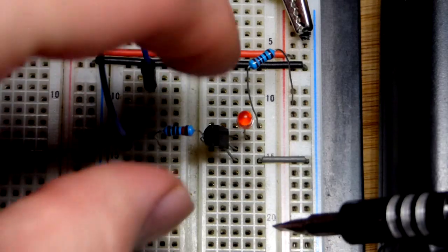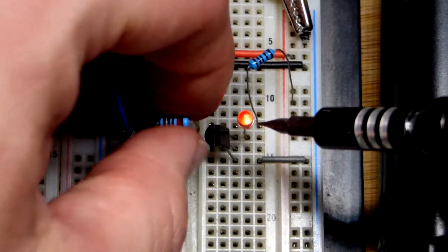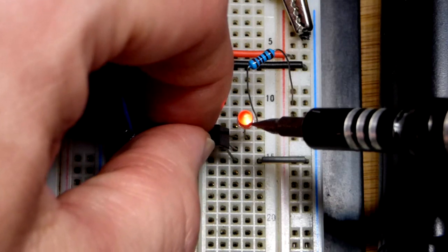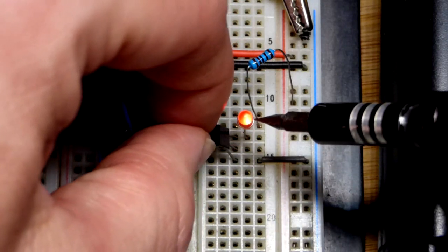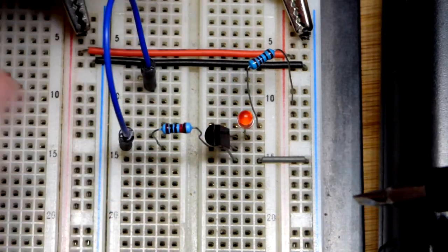It's off right now because the transistor is cut off. There is no current flow. And I dimmed the lamp a little bit so we can see it better. You can see my body can actually provide enough current to get it to light a little bit. So this would be the active region, transistor's conducting, but not fully.